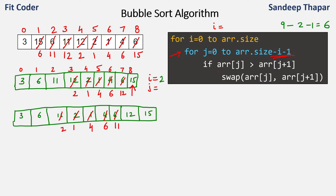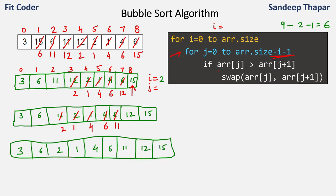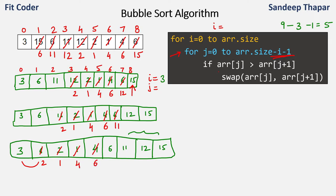After this the array state shows that the last three elements are now in the right order. We just have to compare the initial six elements. For the next iteration i is 3, so the inner for loop runs from 0 to the 5th index. We compare 3 and 6 — right order. Then 6 and 2 — swapped. Then 6 and 1 — swapped. Then 6 and 4 — swapped. Then 6 and 6 — in the right order, so nothing needs to be done.